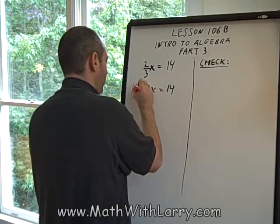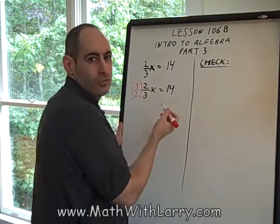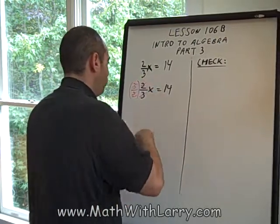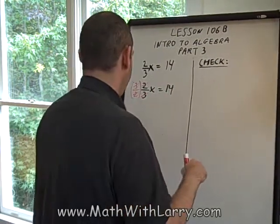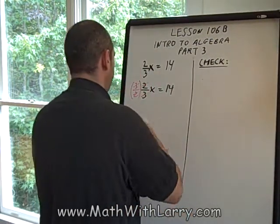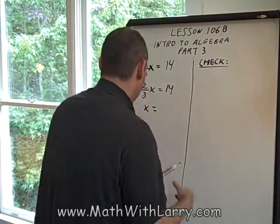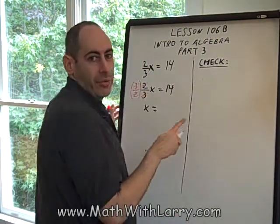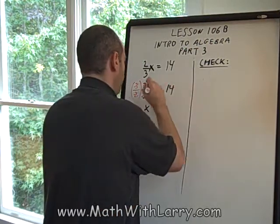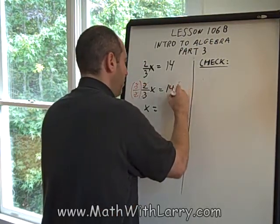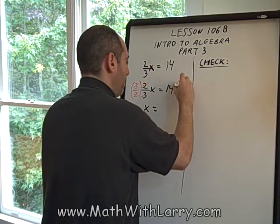make sure you see how the threes will cancel each other out, and the twos will cancel each other out. And remember, it's not so much that they're canceling, but three divided by three is one. Two divided by two is one. And we're left with one x on the left, which is just x. Now, since I multiply the left by 3/2, and don't get intimidated by that. It's a number like any other number. I'm going to multiply the right by 3/2.